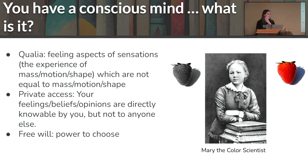So let's first look and examine mind. What is mind? Well, a lot of philosophers have thought really hard about this topic for a long time. And yes, consciousness is really hard to pin down, but there are three aspects that people think are critical to mind. The first is your feeling aspects of sensations. So your experiences of mass, motion, and shape, the material world that aren't equal to mass, motion, and shape. So one good way to think about this is the thought experiment, Mary the color scientist.